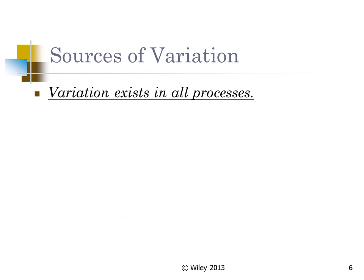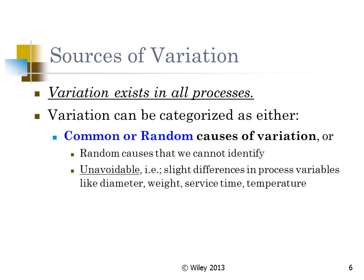What is variation? Variation always exists in all kinds of processes and leads to inconsistency in the quality of the product or service. Companies always want to minimize variation. The first type is called common or random variation — those tiny variations in volume, weight, or other dimensions that are small, unavoidable, and always present.